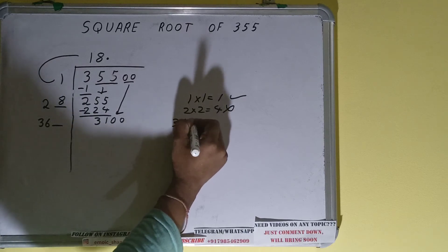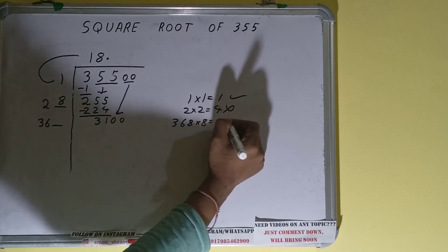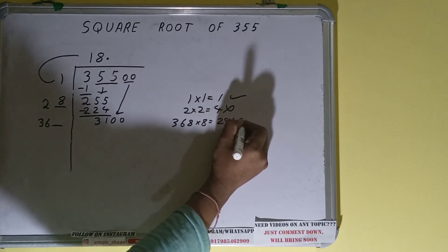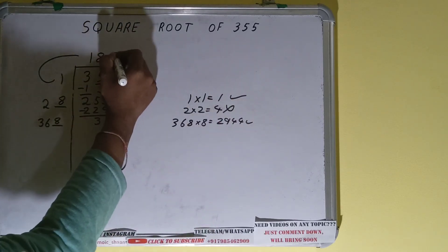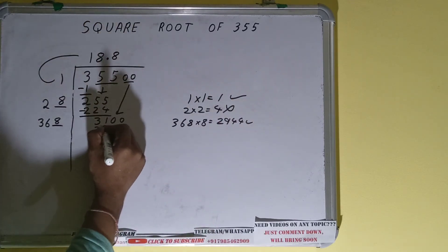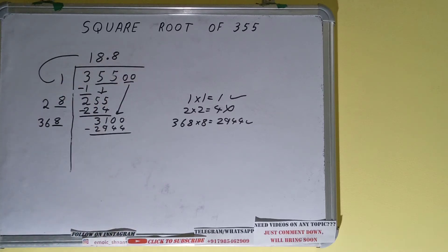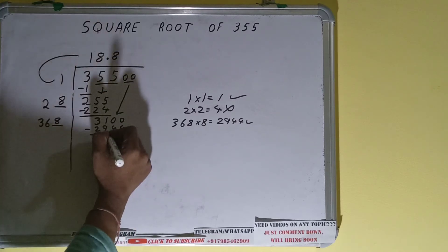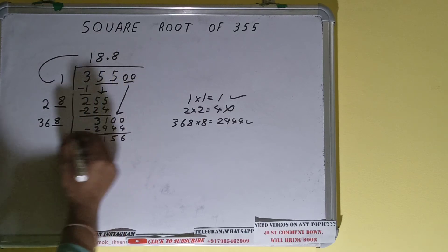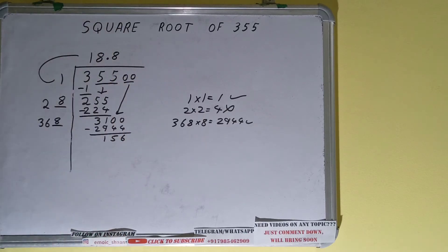Now we can try 8 times. So 368 into 8 will be 2944 which is good to take. So 8 here and 8 here will give 2944, subtract it and we'll be left with 156.